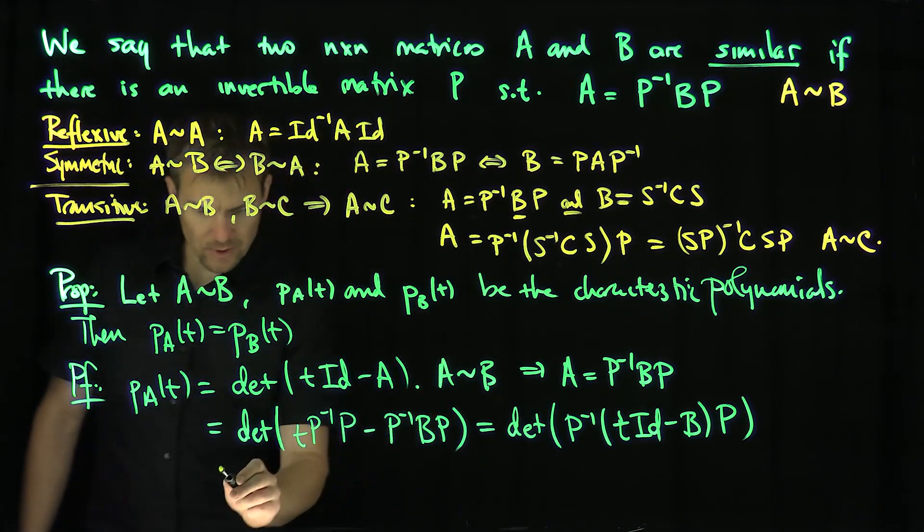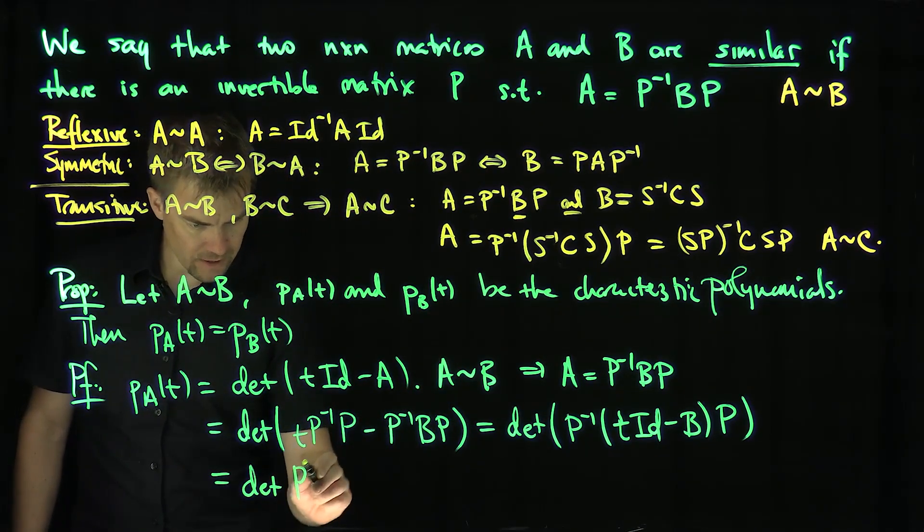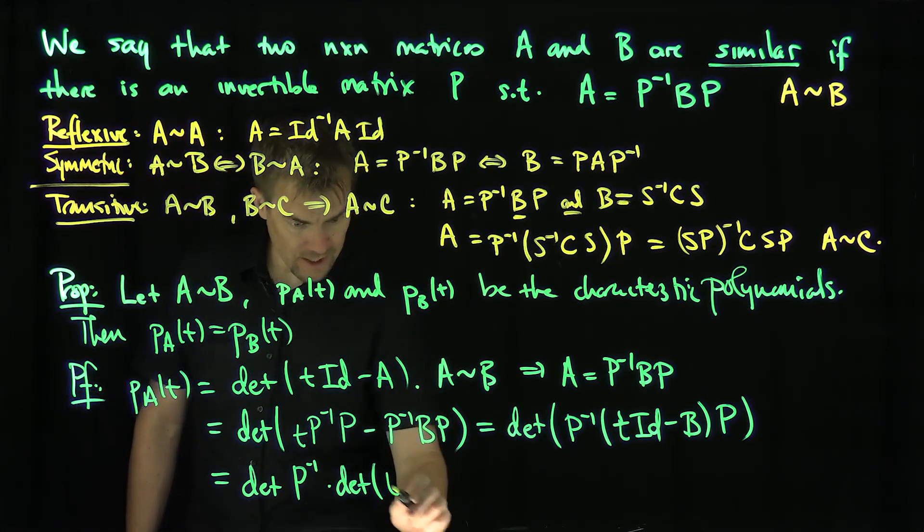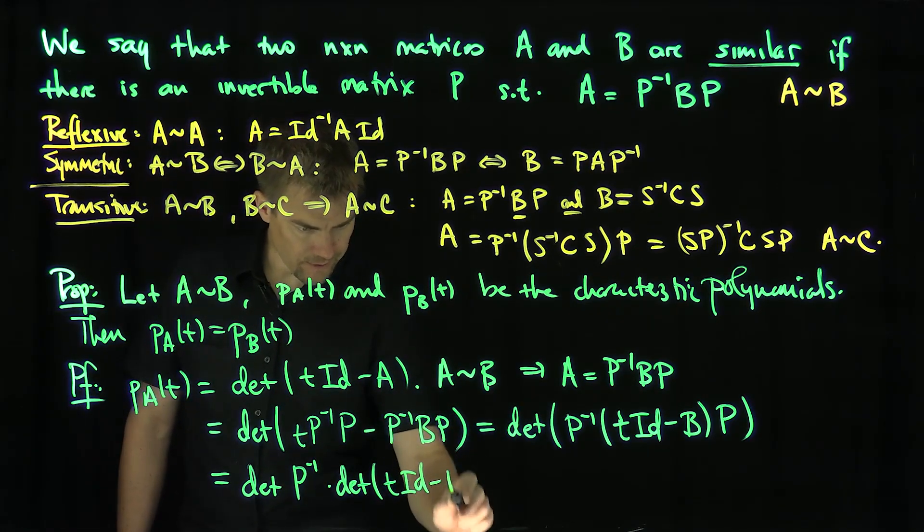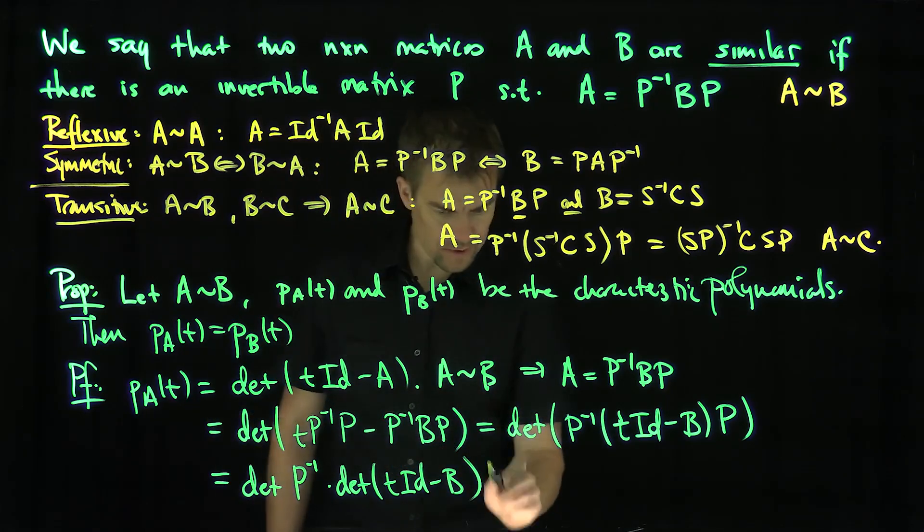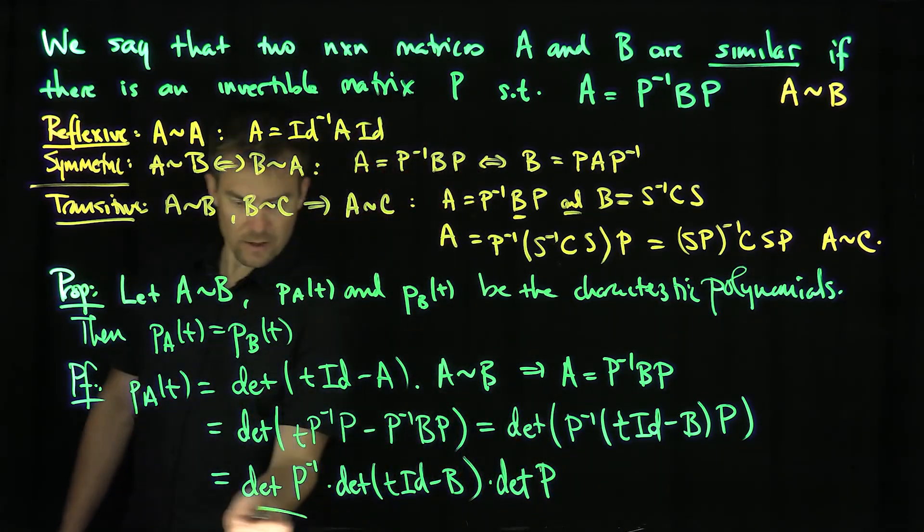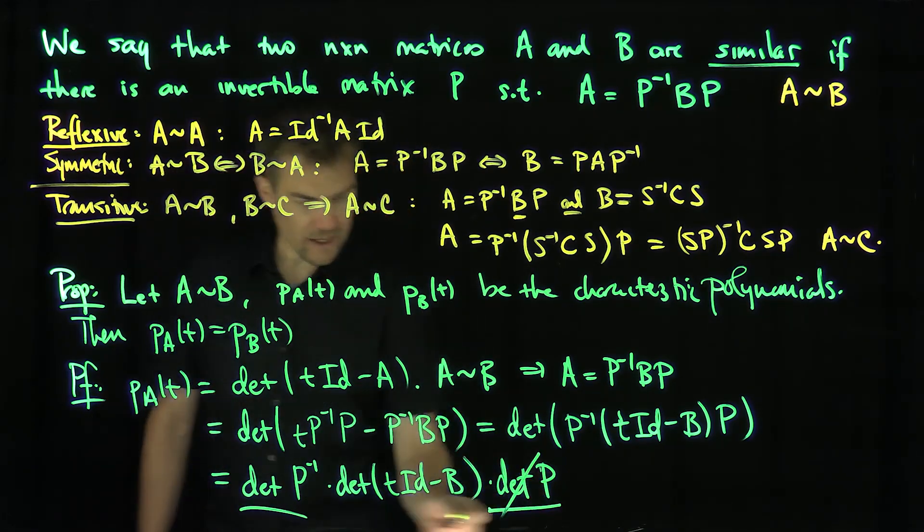And so now I can use properties of the determinants. This is going to be the determinant of P inverse times determinant of T identity minus B